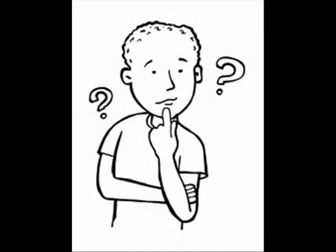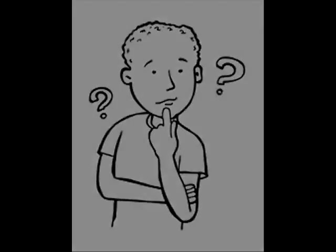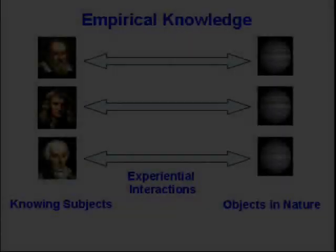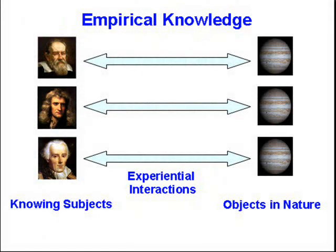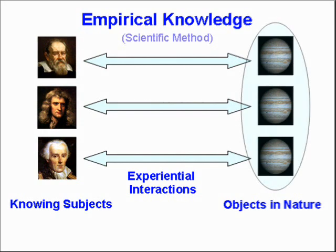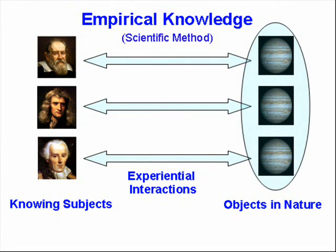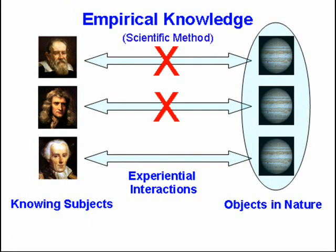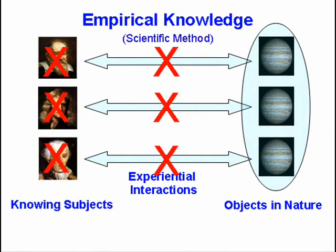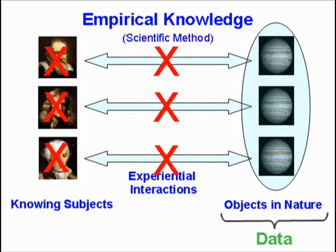Why might this be so? The answer becomes pretty obvious when we reflect upon it. As we have seen in previous videos, knowledge results from an interaction between knowing subjects and a known object. In doing natural science, we don't care about the knowing subjects — we care about the objects in nature. As a result, we fix on them and abstract away both the experiential interactions and the knowing subjects, giving us objective, observer-independent data on the objects in nature.